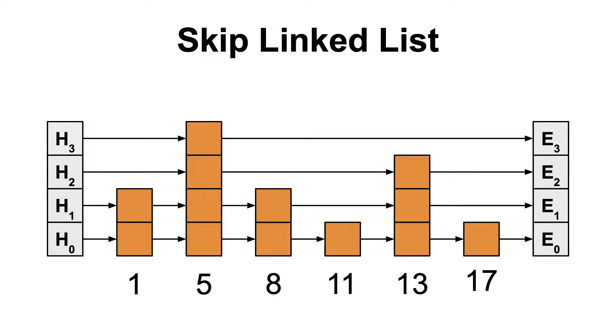The second important idea in hierarchical navigable small worlds is a data structure, namely, the skip linked list, which is a variant of linked list where each node can have a skip pointer that points to a node further down the list. This allows us to quickly skip over large portions of the list, making it much faster to search.